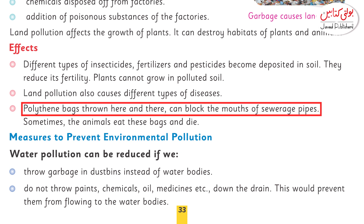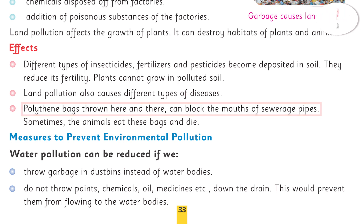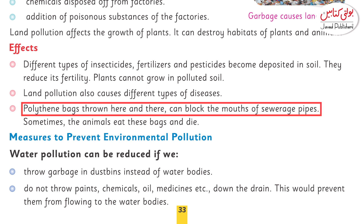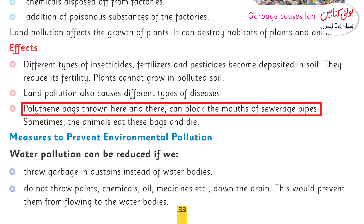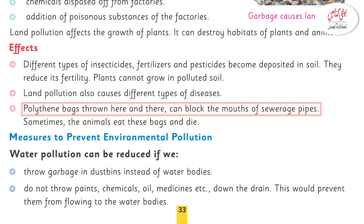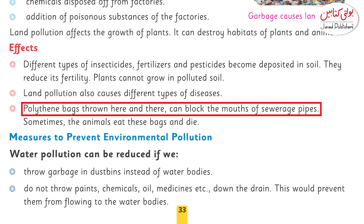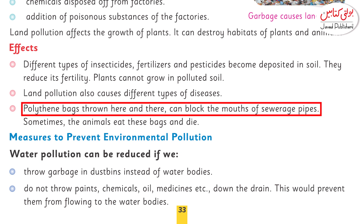Sometimes animals eat these polythene bags and die. Our land is being damaged when bags are carelessly thrown everywhere. Sewerage pipes where water flows can become blocked. If an animal consumes a polythene bag, it can be fatal. These are all things that cause pollution. Please be careful and play your role in controlling water pollution, air pollution, and land pollution.